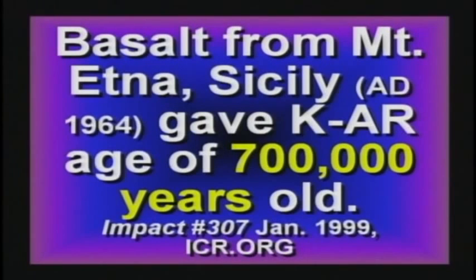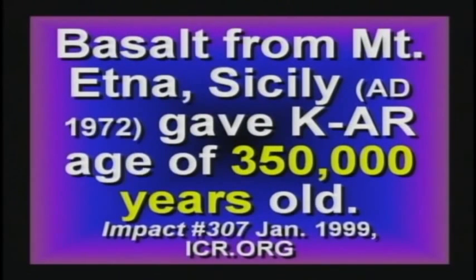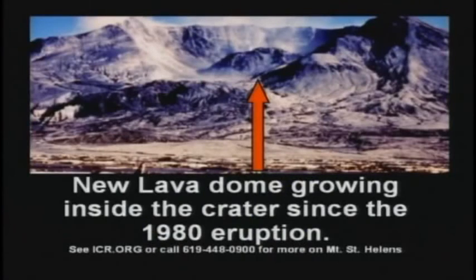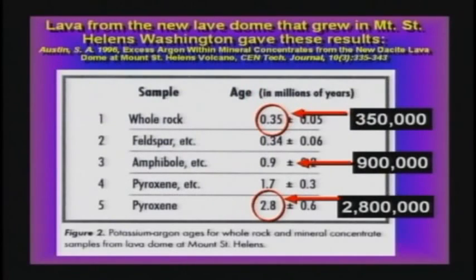Basalt from a volcano in Hawaii erupted in 1959 — when tested, it gave an age of 8.5 million years old. Another volcano on Mount Etna from the 1964 eruption gave an age of 700,000. The 1972 eruption gave 350,000. Lava from Mount St. Helens — brand new lava coming out of the volcano — was tested five different ways and got five different numbers, all the way from 350,000 to 2.8 billion. Notice all five numbers are different, and all five numbers are wrong. It doesn't work.